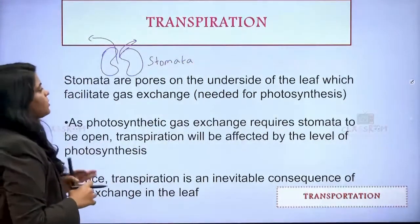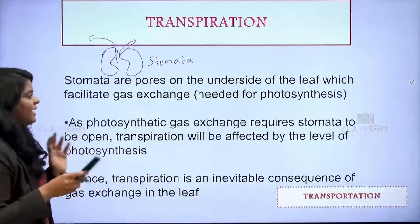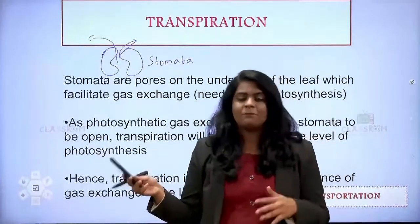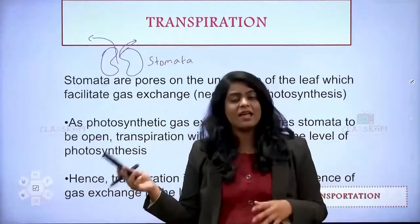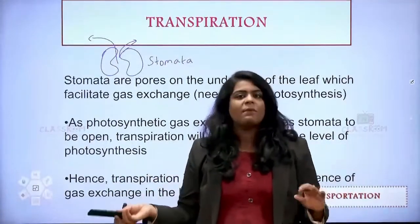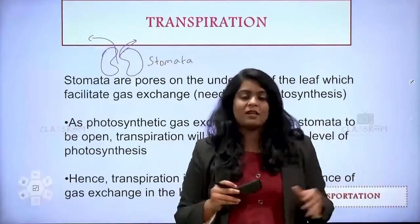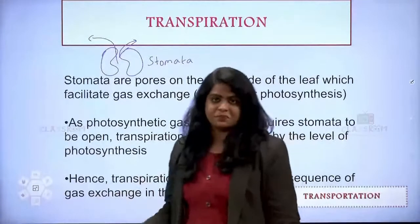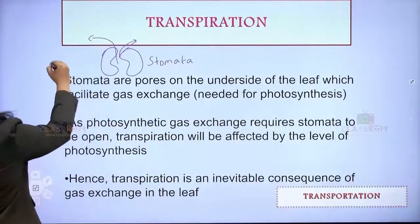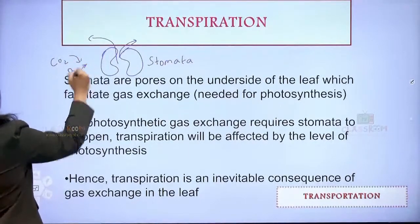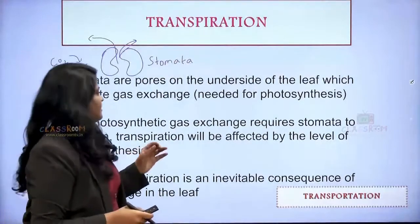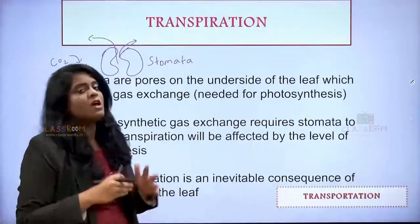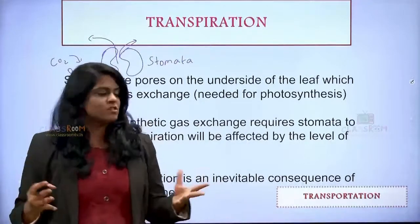Stomata are the pores present on the underside of the leaf which facilitate gas exchange needed for photosynthesis. The raw materials required for photosynthesis are sunlight, chlorophyll, water, and carbon dioxide, and the plant gives out food and oxygen. This exchange of gases — carbon dioxide coming in, oxygen going out — happens through stomata. As photosynthetic gas exchange requires stomata to open, transpiration will be affected by the level of photosynthesis — transpiration only occurs during the process of photosynthesis.